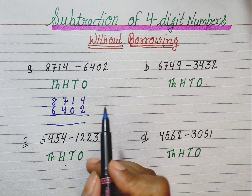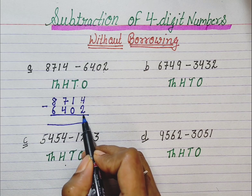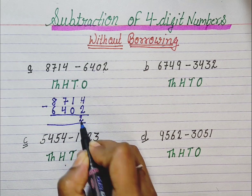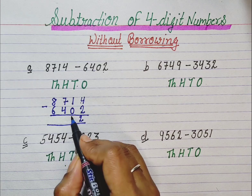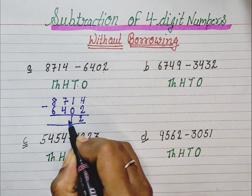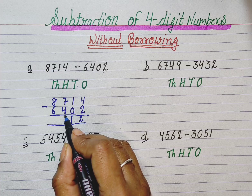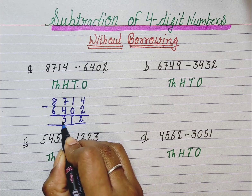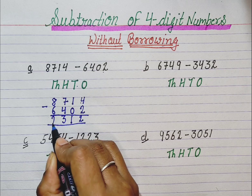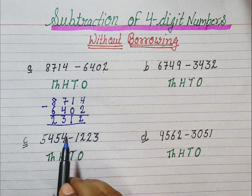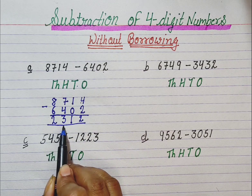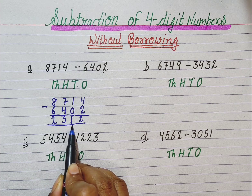Let's start. 4 minus 2 is equal to 2. 1 minus 0 is 1. 7 minus 4 is 3. 8 minus 6 is 2. So the answer is 2312.